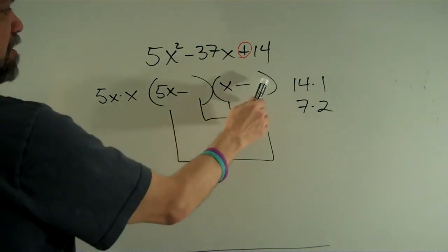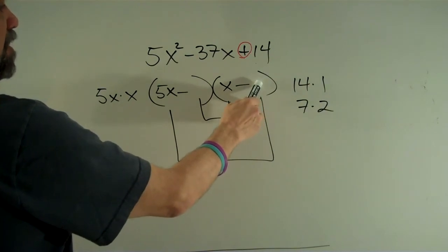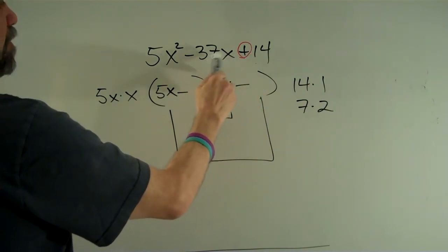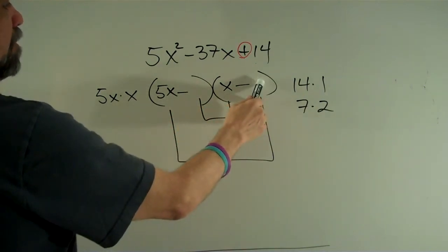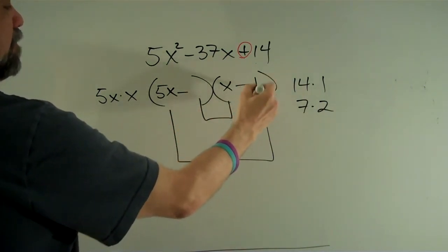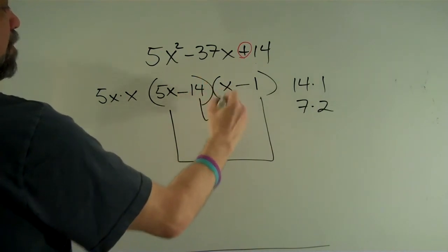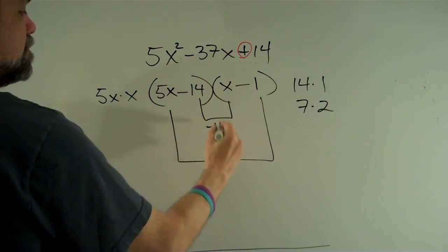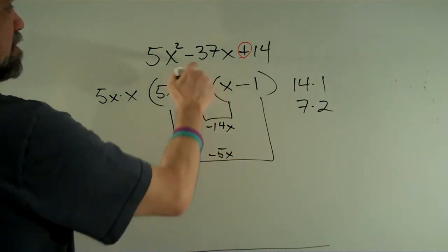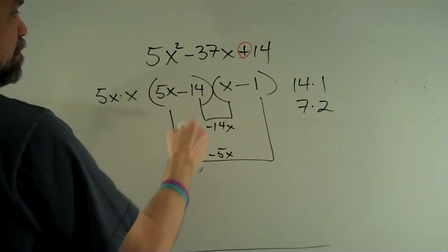Well, 5 times, if I put a 14 here, 5 times 14 is 70. That's getting way too big. That can't be right. If I put a 5 times 1 here, let me try that. 5 times 1 and 14 there, that gets me negative 14x and negative 5x. Combined, that gets me minus 19x. No, that's not going to work.